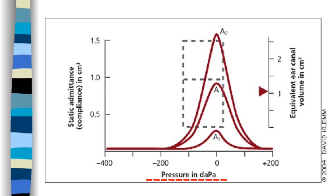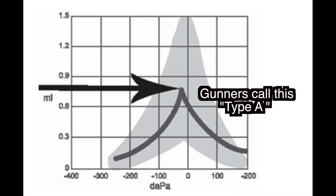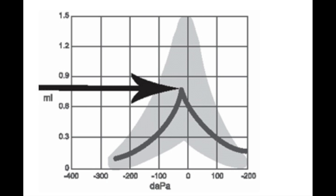The graph has pressure along the x-axis and eardrum compliance or movement on the y-axis. Over here, it shows the external ear canal volume. A normal tympanogram is A-shaped with its peak inside the box. The peak marks the pressure in the middle ear. Normal pressure is around 0 on the x-axis.